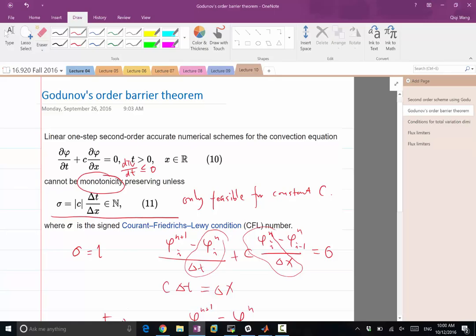So Godunov's theorem says that if you want second order accuracy, you can either sacrifice monotonicity, which creates Gibbs phenomenon, or you have to go to a nonlinear scheme. Only first order schemes can have both monotonicity and linearity.